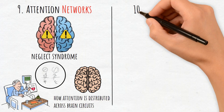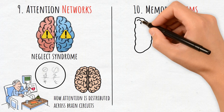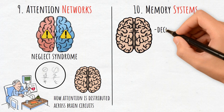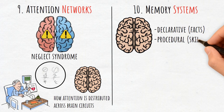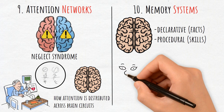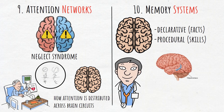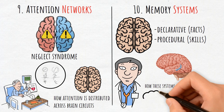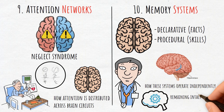10. Memory Systems. Memory is divided into types, such as declarative — facts — and procedural — or skills. Studying patients with hippocampal damage shows how these systems operate independently, with one form of memory often remaining intact when the other is impaired.